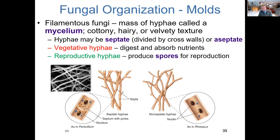Hyphae come in two major categories: vegetative type and reproductive type. Reproductive hyphae are involved in the ultimate production of spores to continue the life cycle of the mold. Vegetative hyphae help in the absorption of nutrients from the surroundings — in that sense they're plant root-like in terms of function.